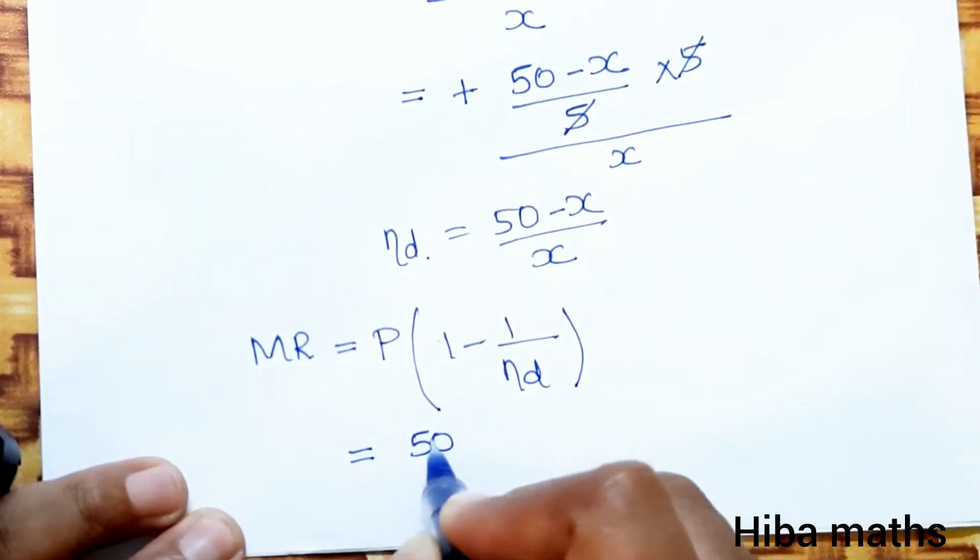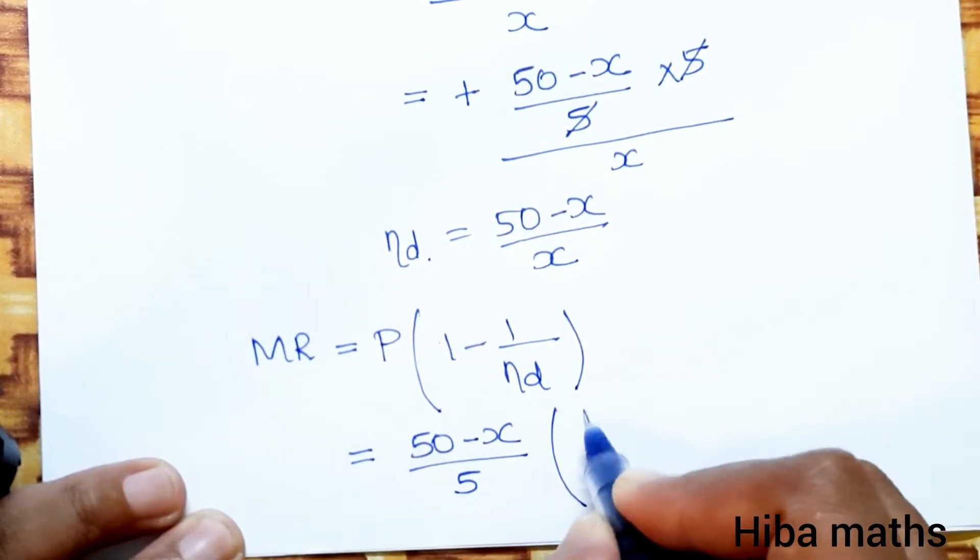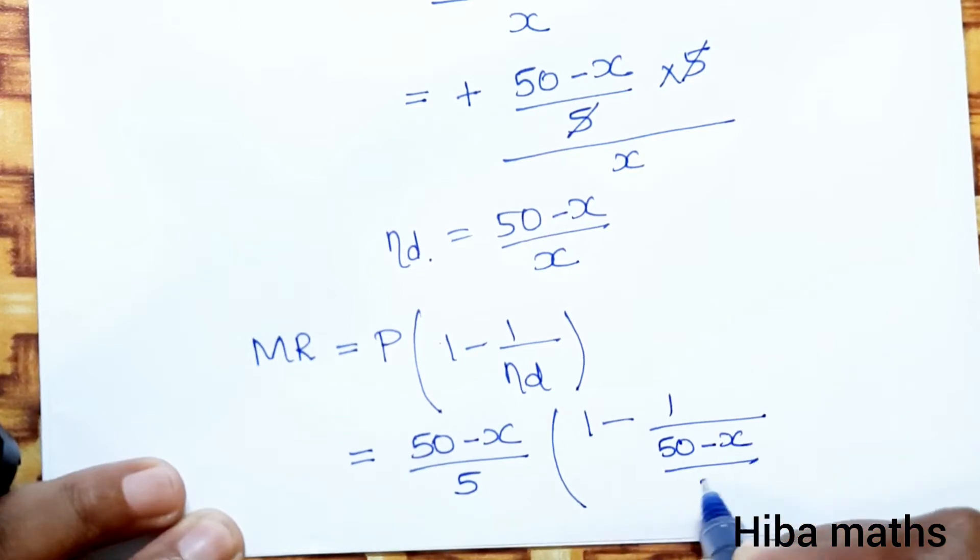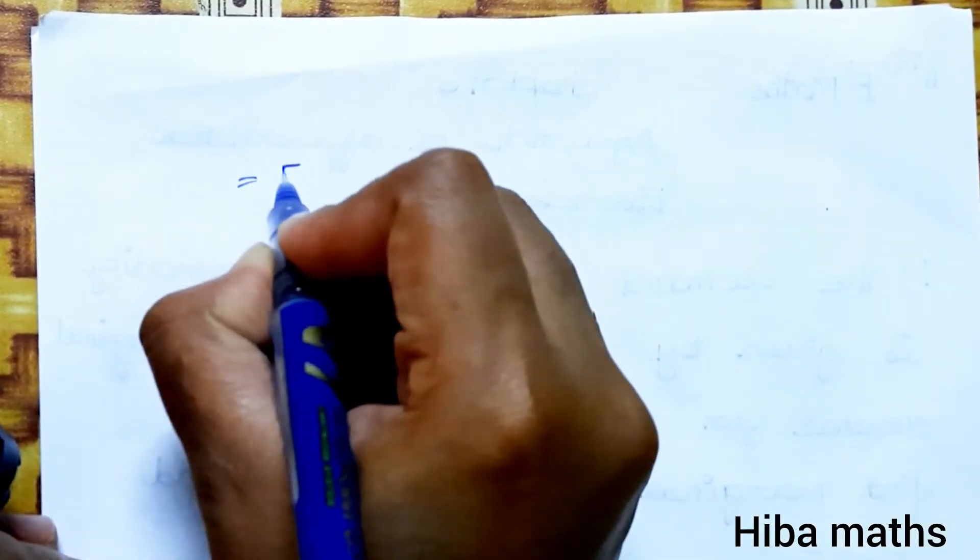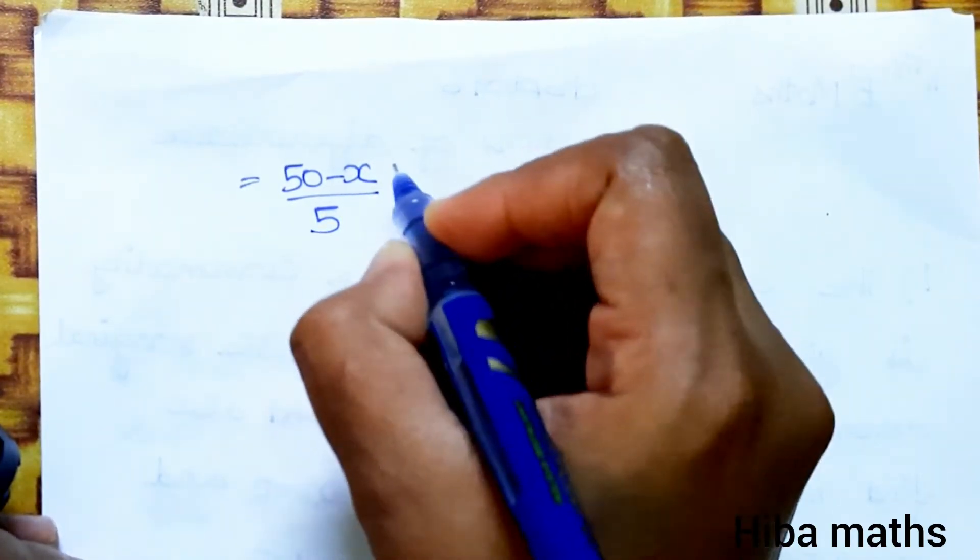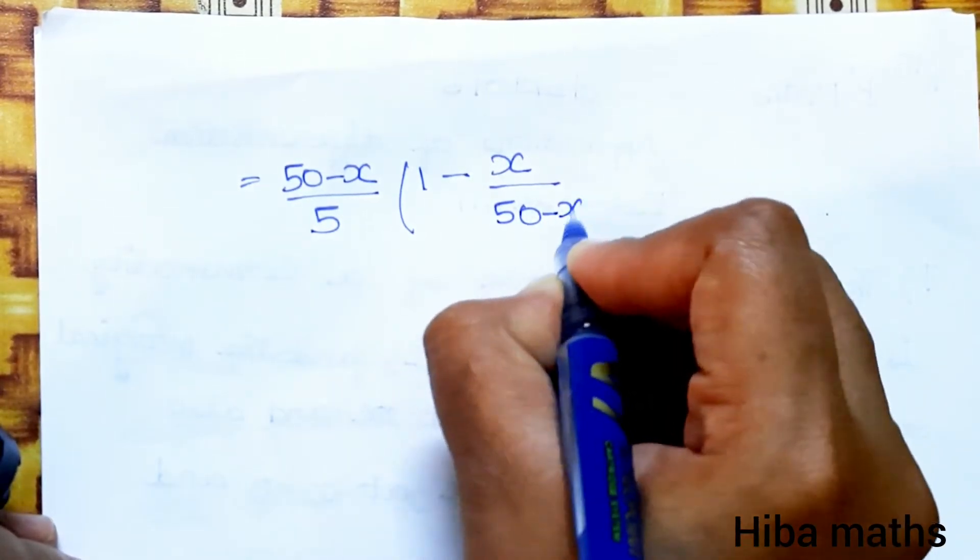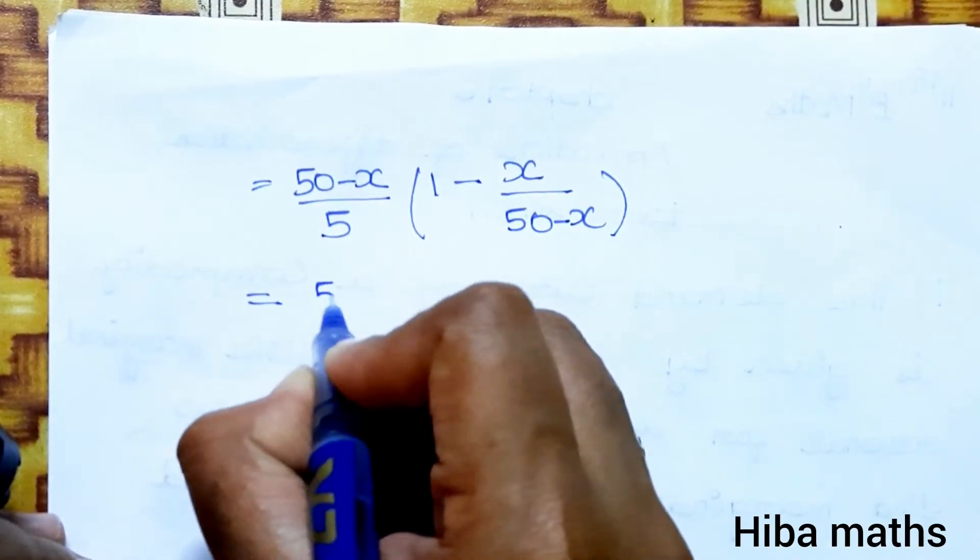Marginal revenue MR equals P times 1 minus 1 by η_d. Substituting, MR equals 50 minus x by 5 times 1 minus 1 by η_d, which is 1 minus x by 50 minus x.